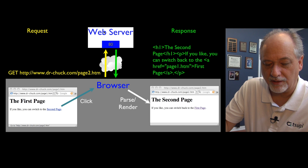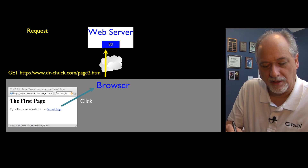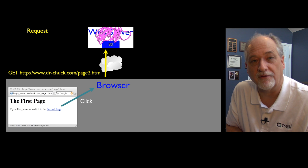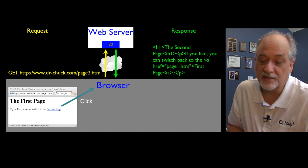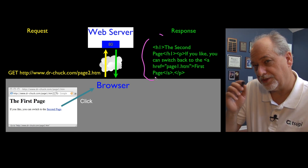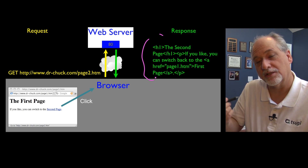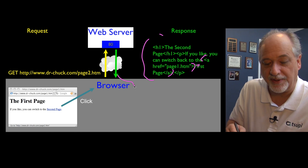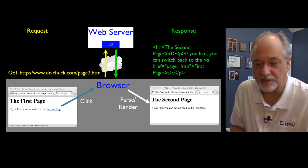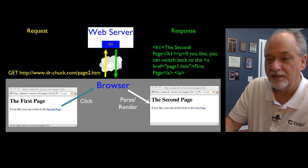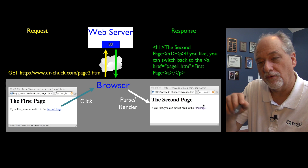The web server does some work — reads files, runs code, constructs an answer — and sends back a web page in the format of HTML, the Hypertext Markup Language, which is different from HTTP, the protocol we're using. HTML is the format of the document we get back, and it contains anchor tags with href links. Your browser then renders it according to the rules of HTML, CSS, and JavaScript, making a pretty web page. If that page has a link, clicking it starts the whole request-response cycle over again.